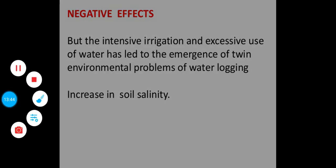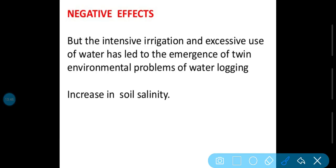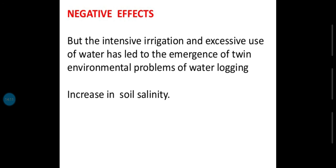Iske baad mein negative effects kya aaye — positive ke saath mein negative effect bhi aaya. But the intensive irrigation and excessive use of water has led to the emergence of twin environmental problems of waterlogging. Yahan par lagaataar paani ka use karne se water logging ho gayi — paani bhara rehne lag gaya — jisse increase in soil salinity aayi. Yani jo Punjab ke andar over-irrigation ki problem aa rahi thi, woh yahan par bhi aane lagi; soil ki salinity badh gayi, current minerals increase hone se soil infertile ho gayi.